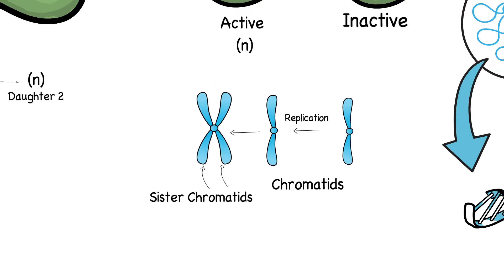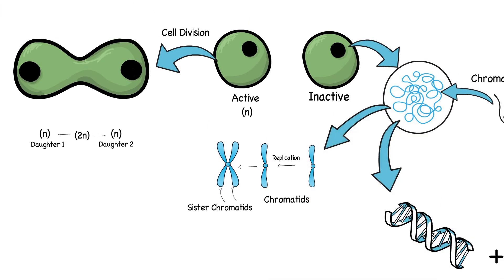These sister chromatids, during a later stage of cell division, divide from one another and are given to each daughter cell.